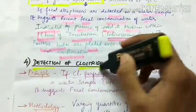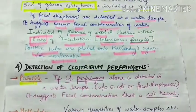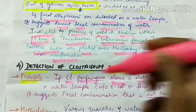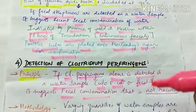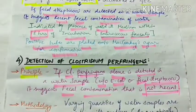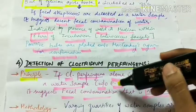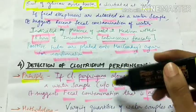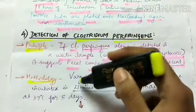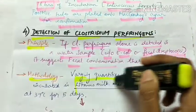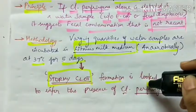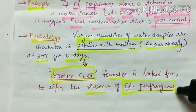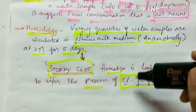For detection of Clostridium perfringens: if C. perfringens alone is detected without E. coli or fecal streptococci, it suggests fecal contamination that is not recent. Varying quantities of water are incubated in litmus milk medium anaerobically at 37°C for 5 days. Stormy clot formation indicates the presence of Clostridium perfringens.